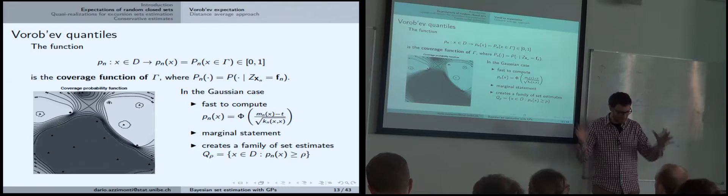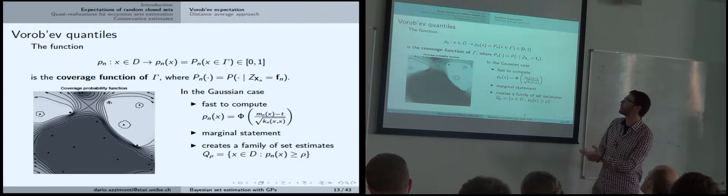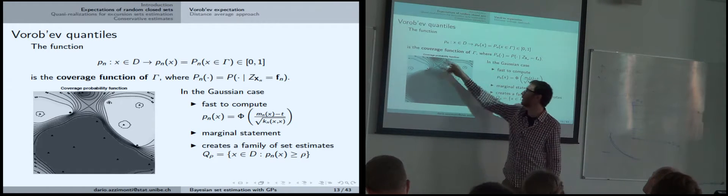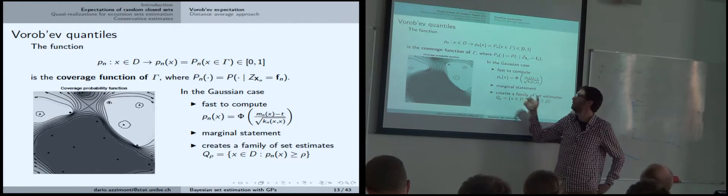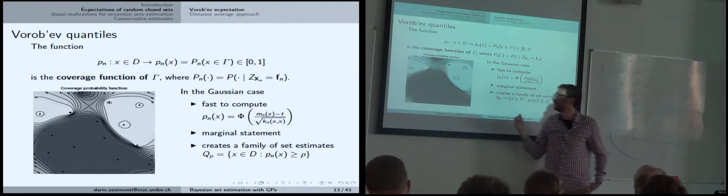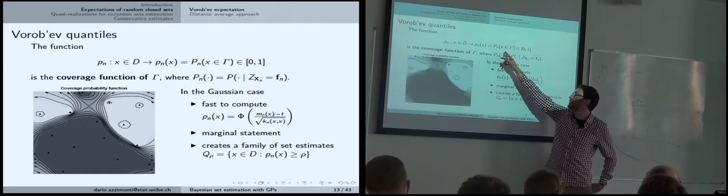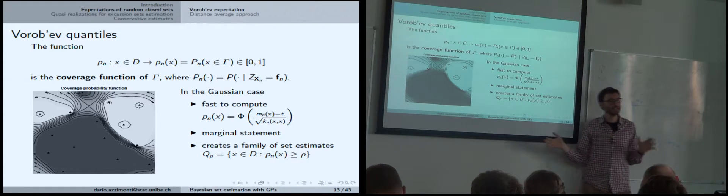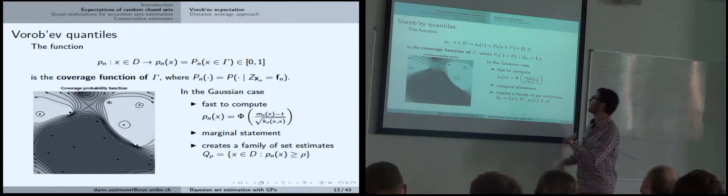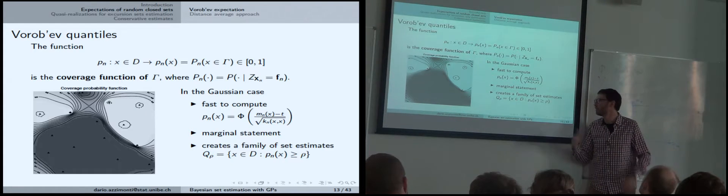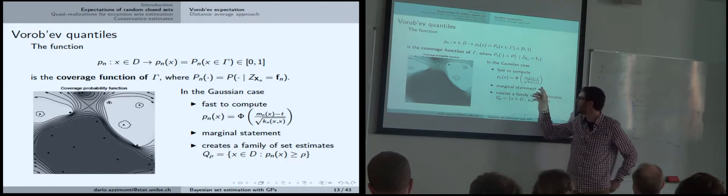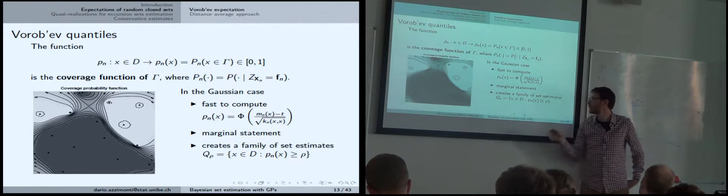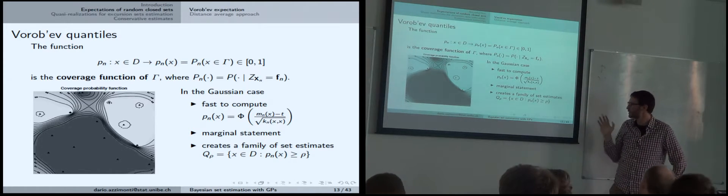We have this random object — this random set — and we need to summarize its distribution. The first thing we can do, which David briefly introduced on Tuesday, is compute the coverage function of gamma. This function tells you, for each point in the input domain, the probability that this point belongs to the set — a marginal statement. Since it's an excursion of a Gaussian process, we have a very nice characterization: we can compute it almost analytically. We need the posterior mean and covariance kernel, and then this is a univariate CDF of a standard normal — really easy to compute.